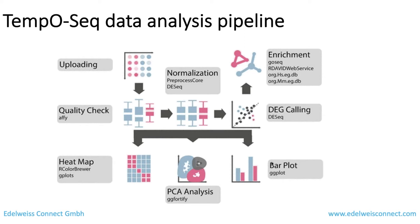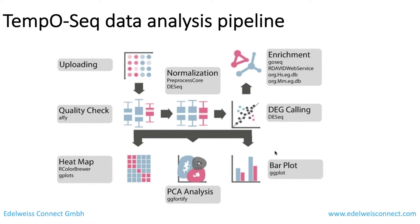This is a graphical representation of the workflow I just described. You upload your data, do the quality check, pre-process, normalize, and perform differential expression analysis. From there, you have different routes: enrichment analysis using different tools, heat maps for visualization, PCA to see how samples cluster, and bar plots to see gene expression across conditions.